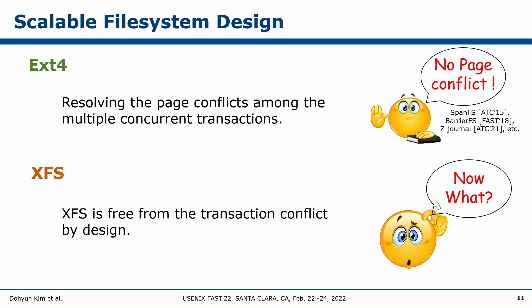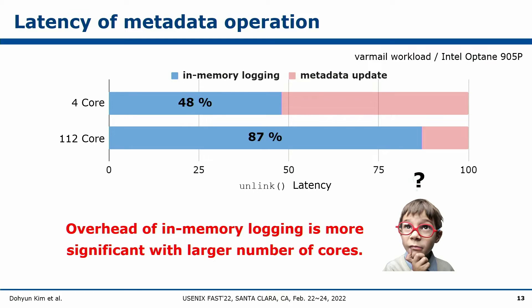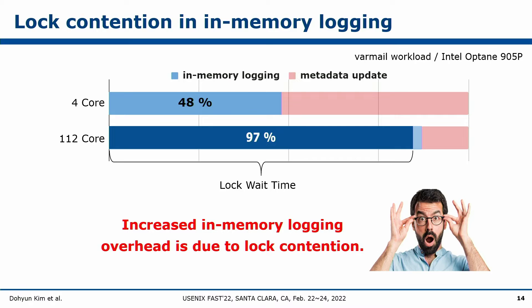In our work, we first identified the root cause of scalability failure in XFS. We measured the detailed unlink latency in the BarMail workload and compared the latency of in-memory logging versus metadata update in the unlink system call. With a larger number of cores, the overhead of in-memory logging becomes more significant — its percentage in unlink increased from 48% to 87% as core count grows. We then investigated what happened inside in-memory logging and found increased overhead due to log contention. The log wait time accounts for 97% of in-memory logging at 112 cores.